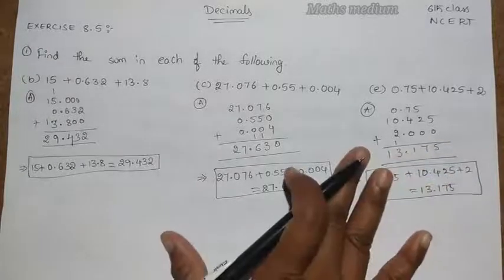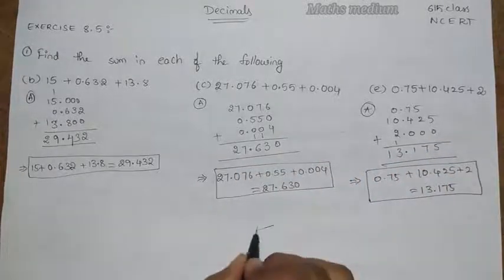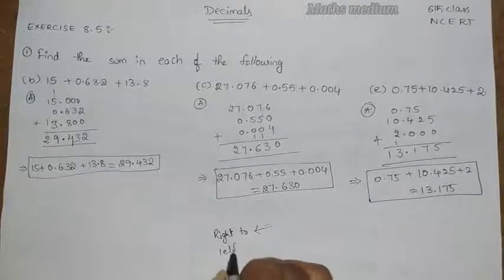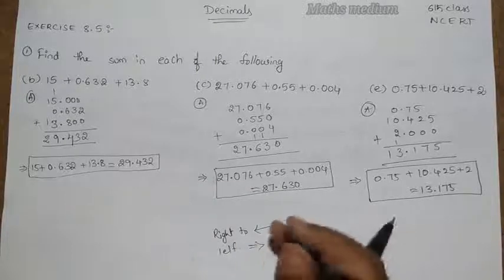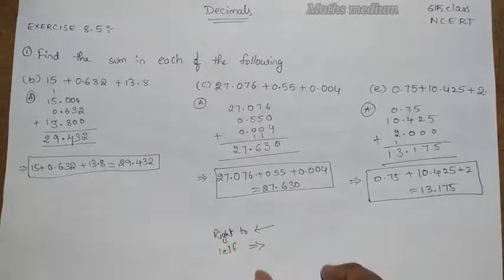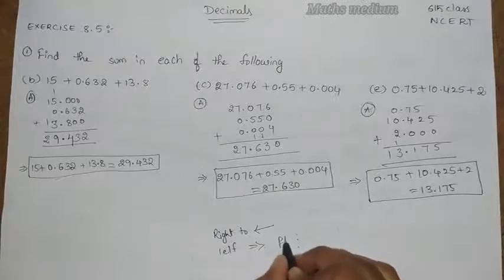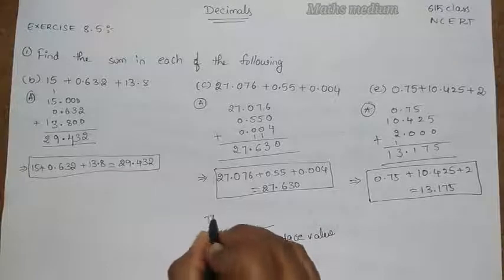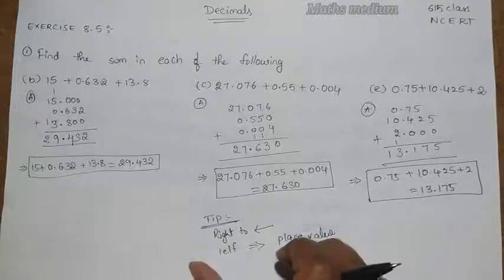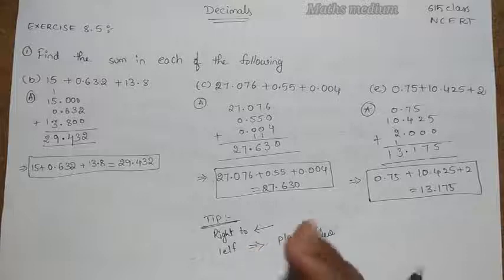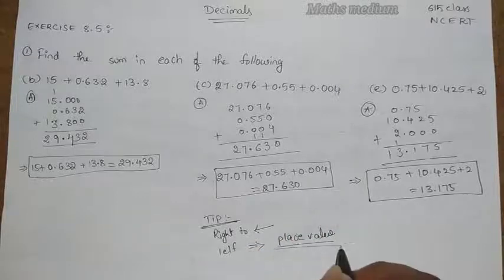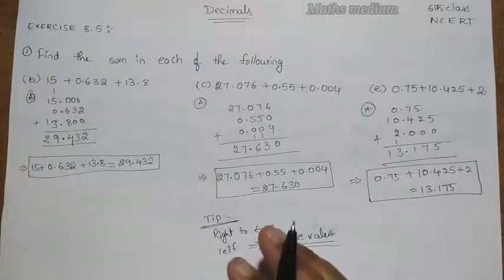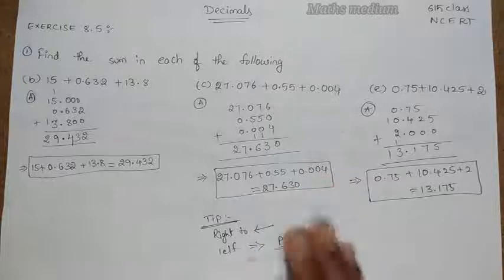Here is the simple tip for the addition. That is nothing but always start from the right to the left. Another thing is arrange all the numbers according to the point and place values. That is the main key point for the addition of decimals. We have to first arrange according to their place values, then start addition from right to left. Then we will get the correct answer about the decimal additions.